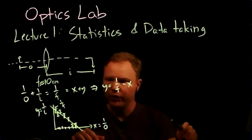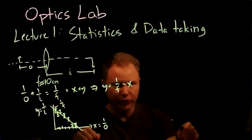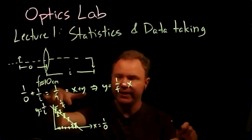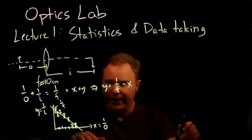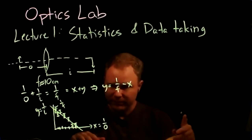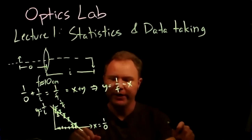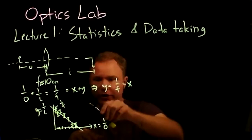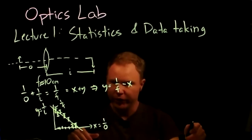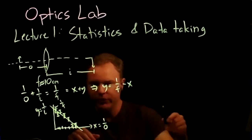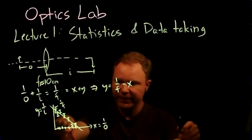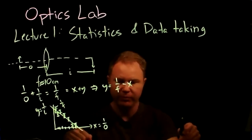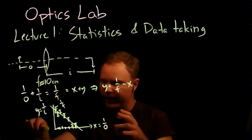We'll start to answer all those questions today. In all the statistics I'm going to do for the next three classes, keep in mind this experiment — it will be our paradigm example. Today I'm not going to talk at all about fitting the curve. I'm just going to focus on a single object distance: how do we get this point, and how do we get the error bars on that point?